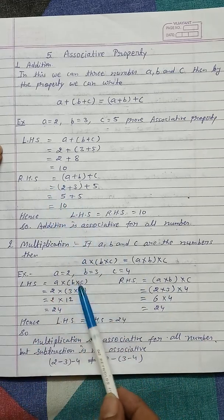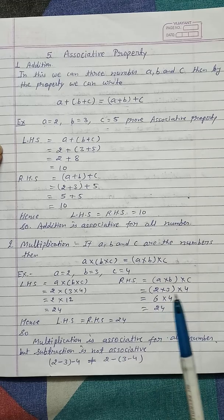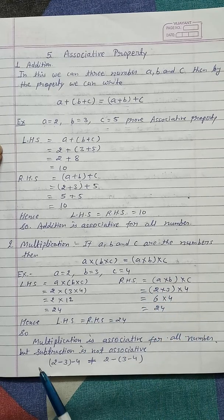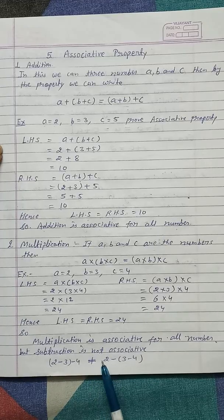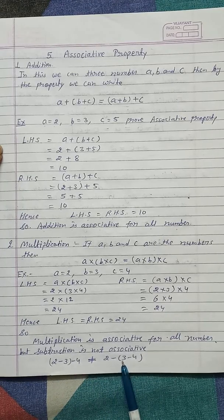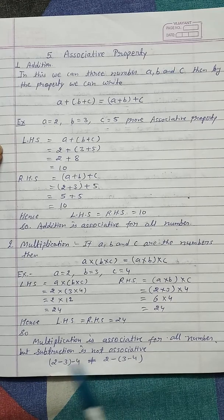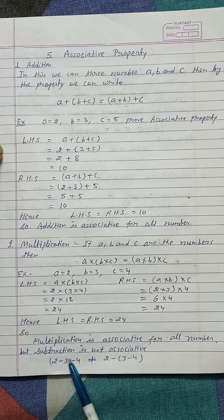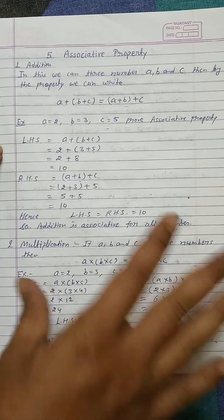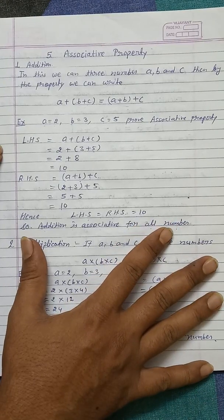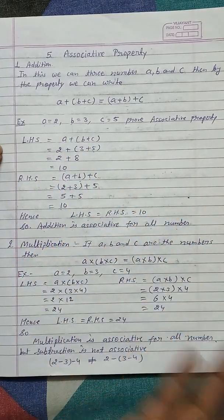Now these two operations, the associative property holds. But in subtraction we can say 2 minus (3 minus 4) is not equal to (2 minus 3) minus 4. The answer of these two sides are not same. So we can say subtraction is not associative for any numbers. The basic concept is we can add and we can multiply in any order.